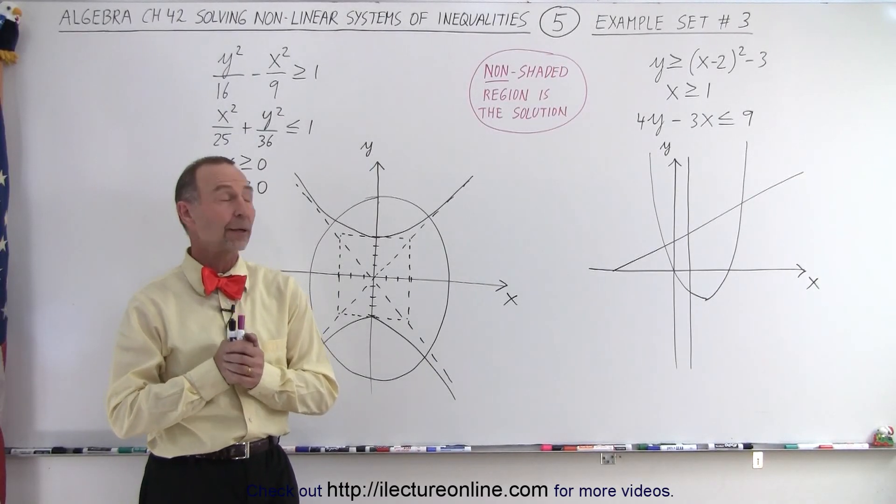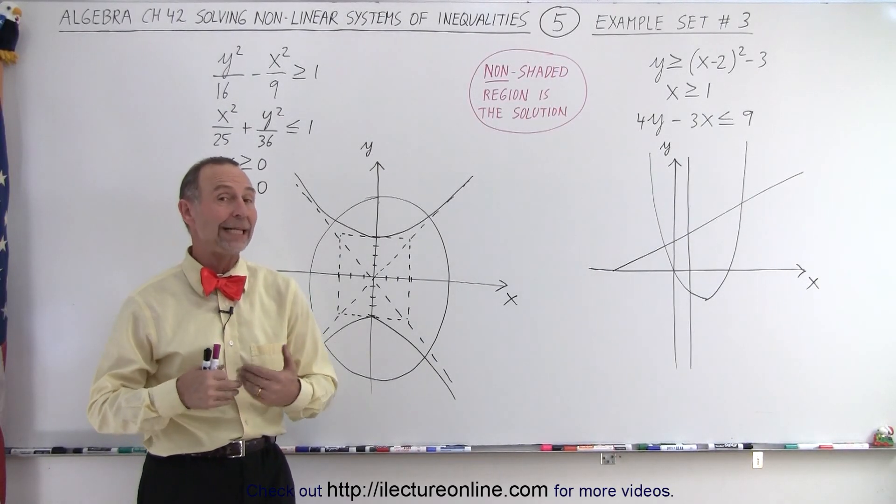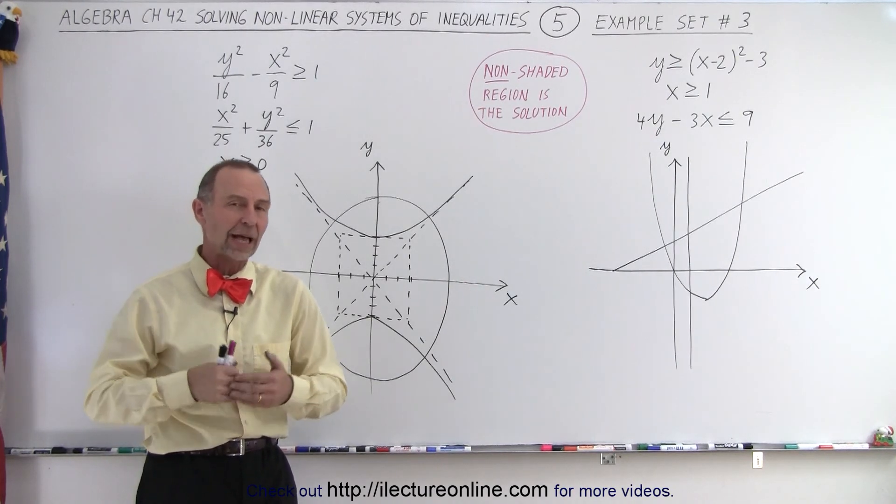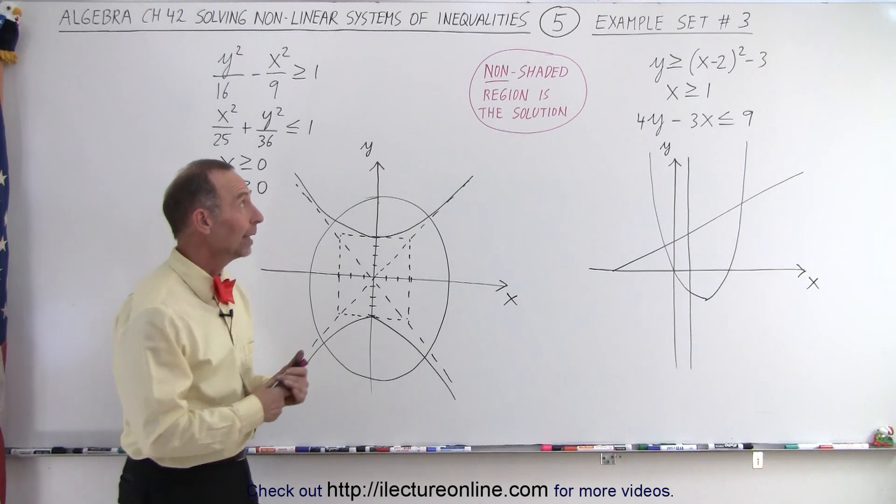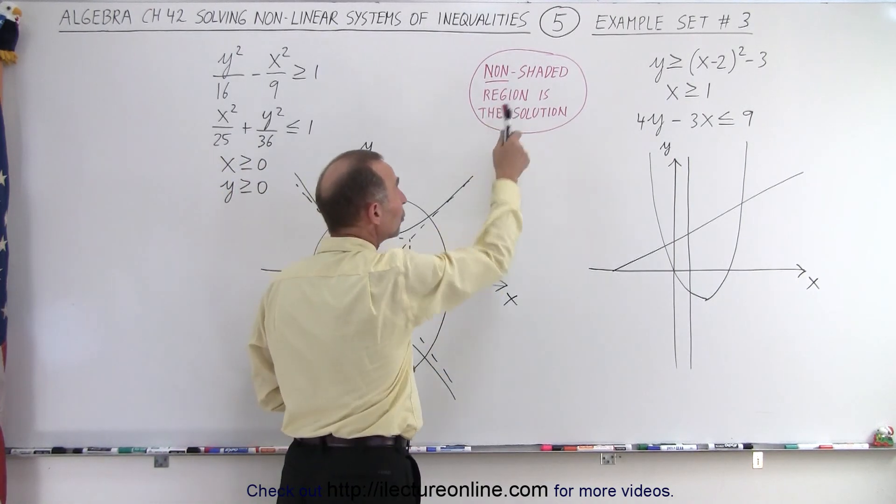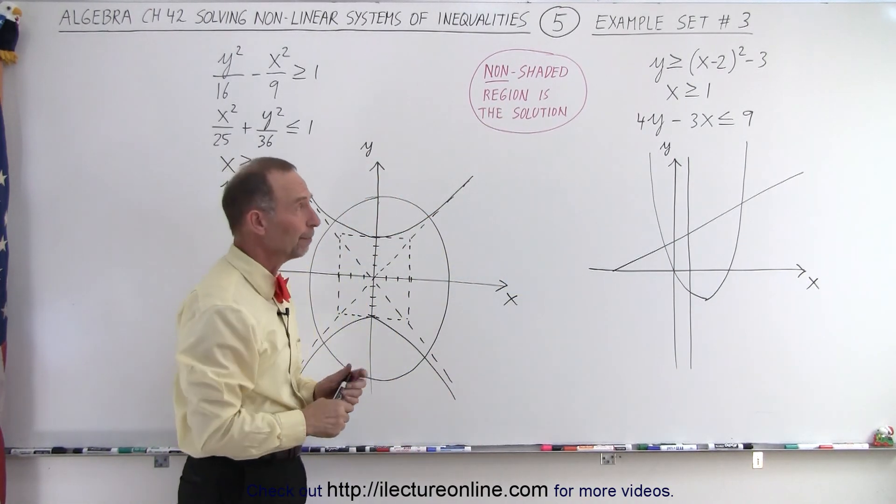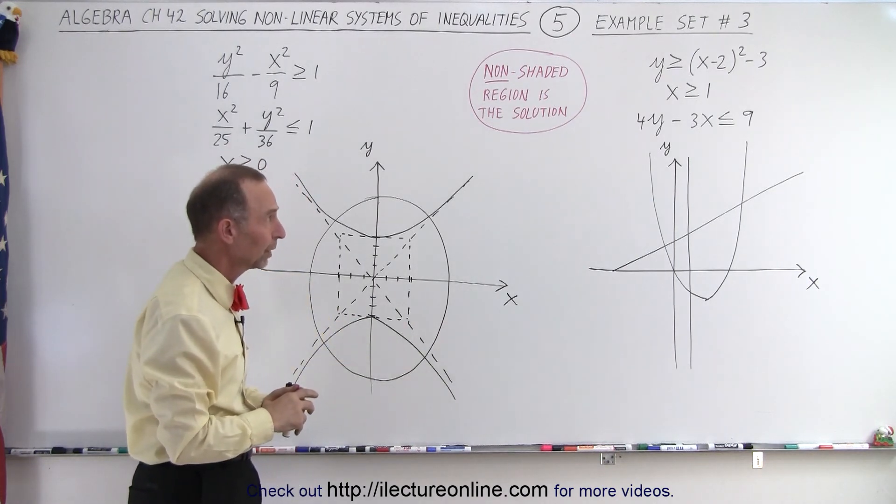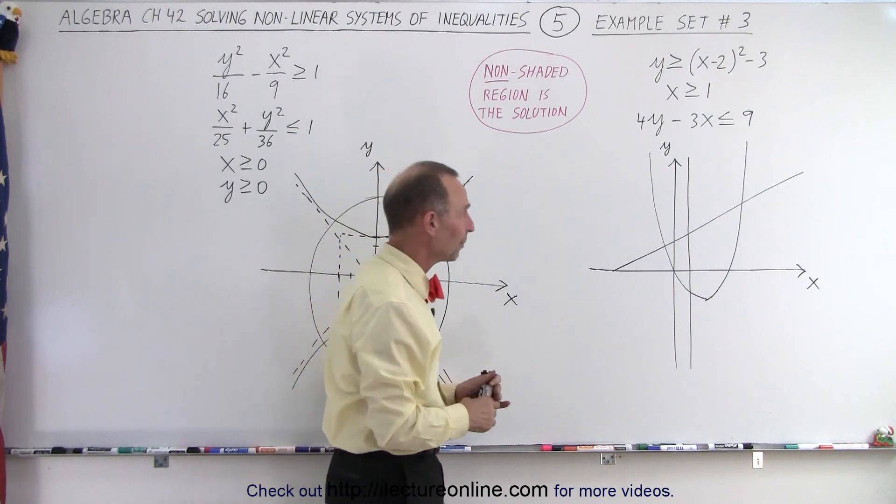Welcome to our lecture online. Now here it's where it's beginning to get really interesting, where we have three or even four inequalities that we have to solve at the same time. And the methodology where the non-shaded region is the solution becomes the easiest way to deal with it. So we simply keep shading away the portions that are not part of the solution. So let's take a look at our first example here.